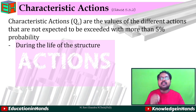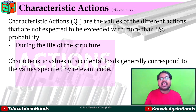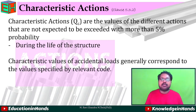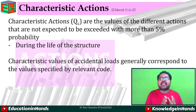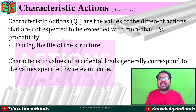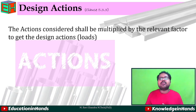For characteristic values of accidental loads, these generally correspond to the values specified by the relevant code. In IS 800, the characteristic values for accidental loads are specified in a separate section. After characteristic actions, we move on to design actions.